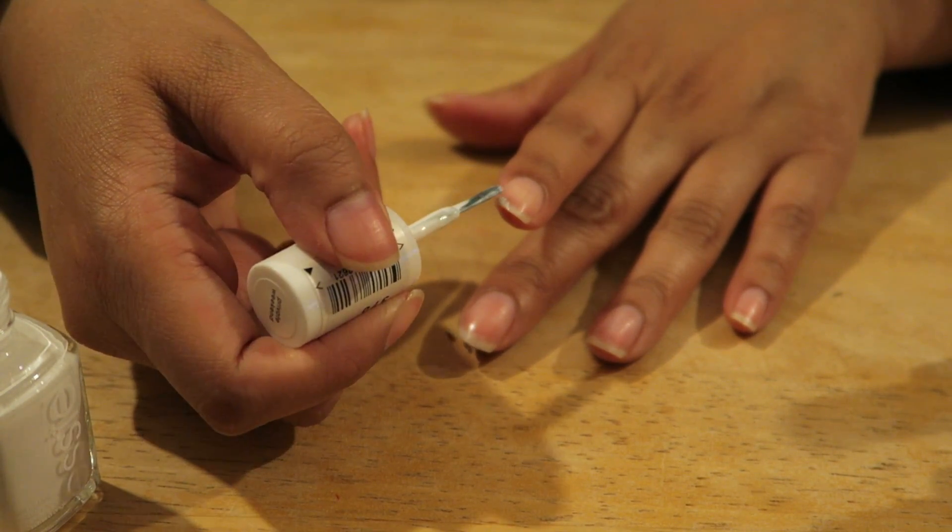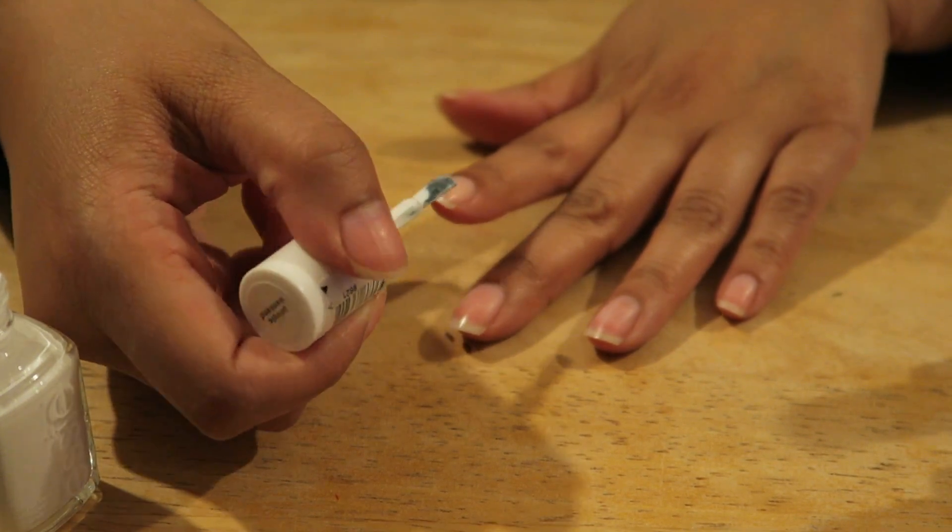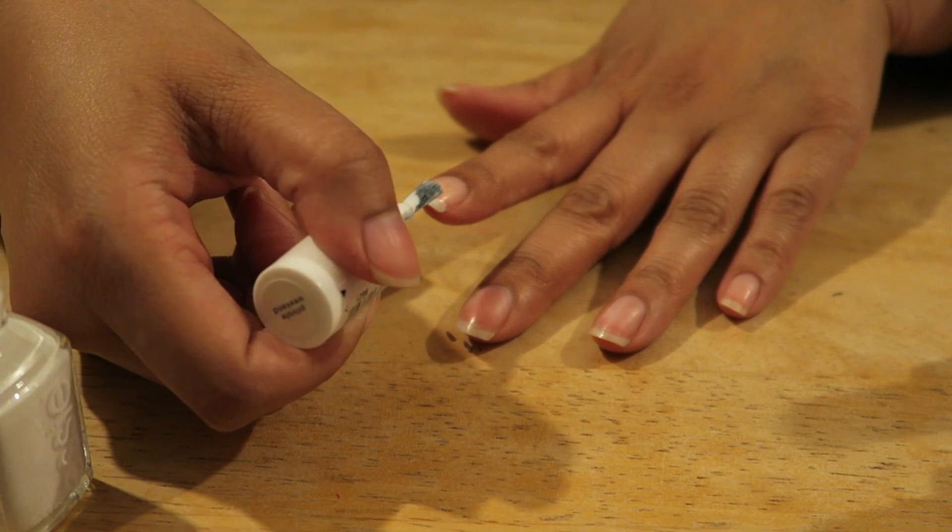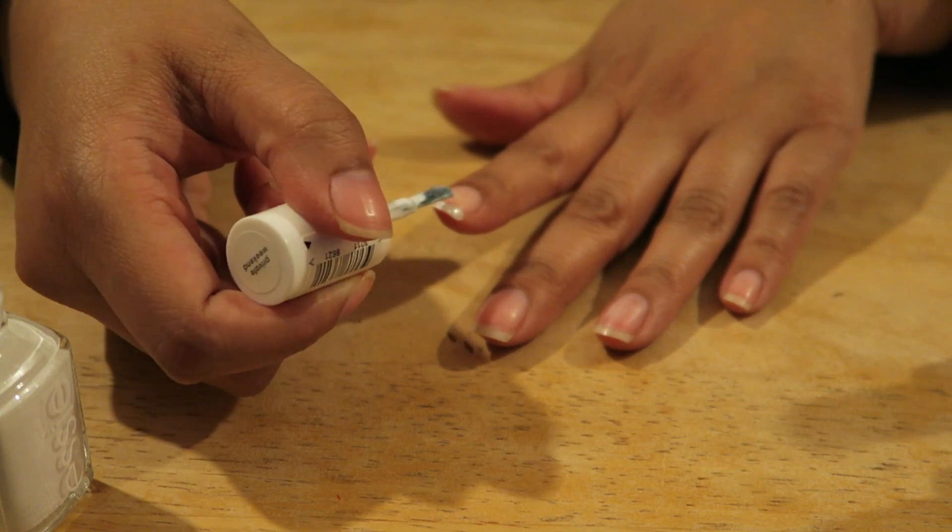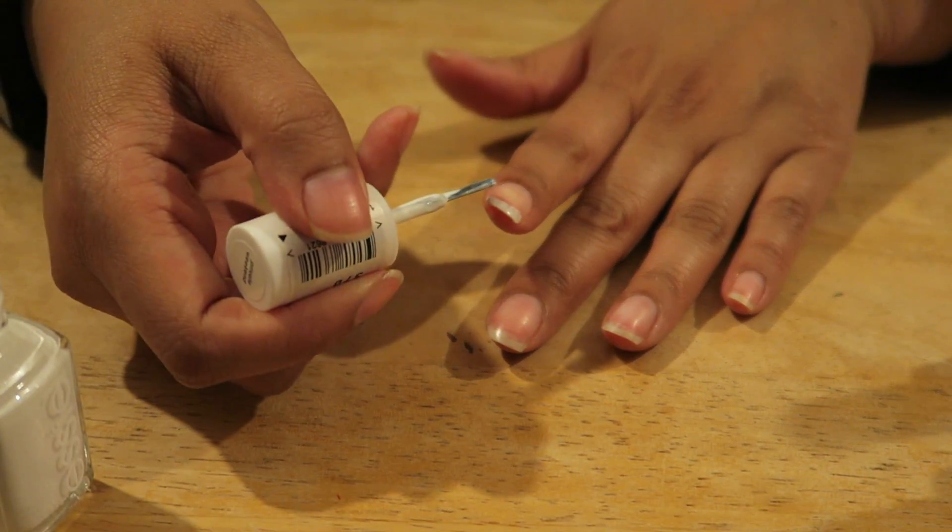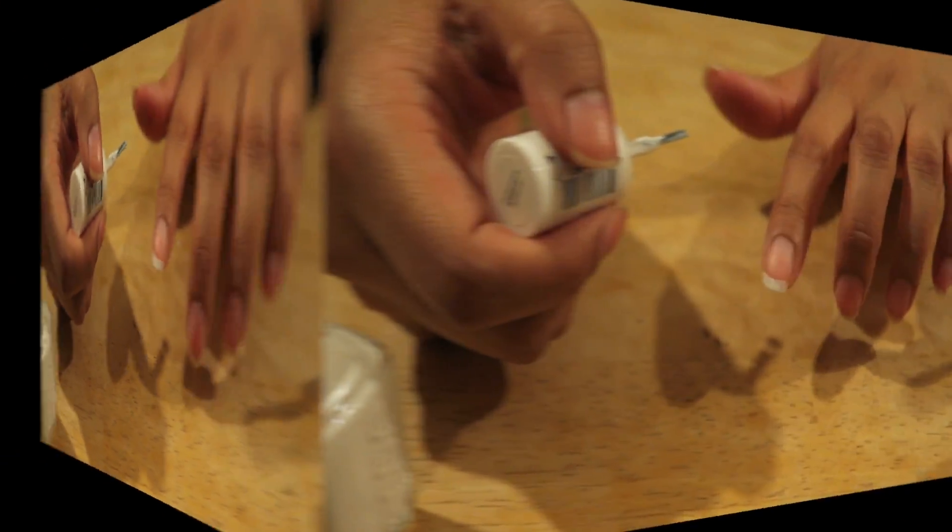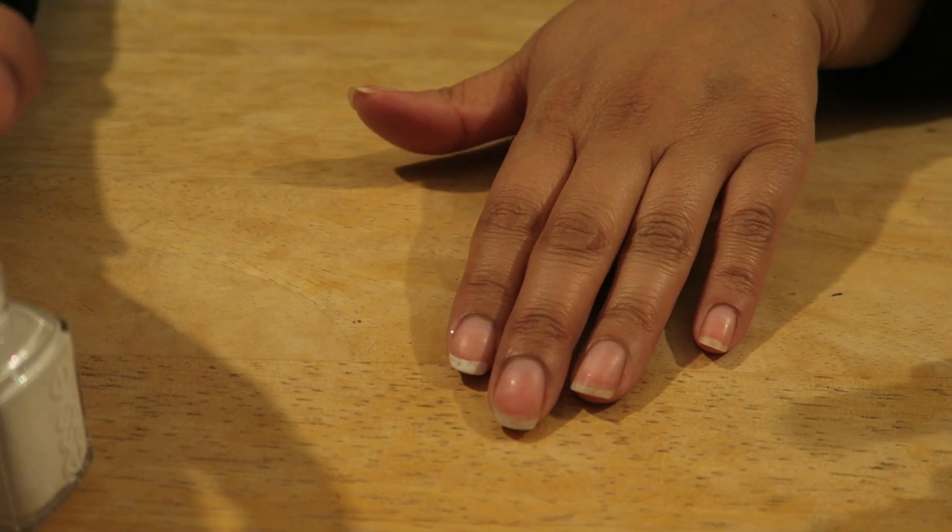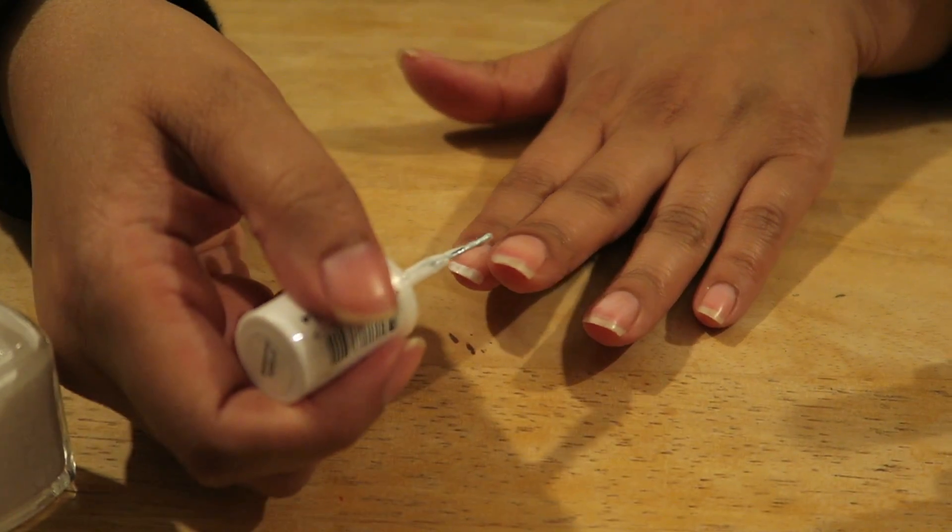And then we just neaten it up. So this basically goes on quite quickly and it just means that you can kind of neaten it up as well. That's a tip actually done and it's really quick and simple to do in the three brushstroke method.